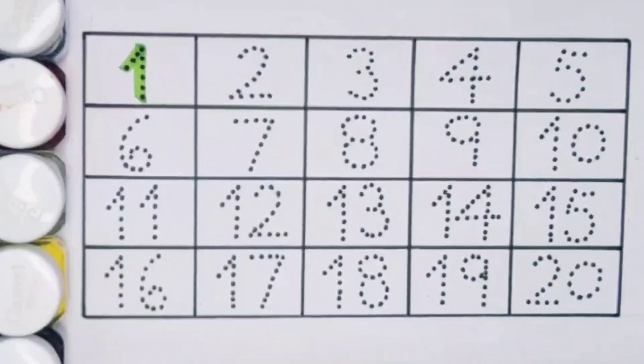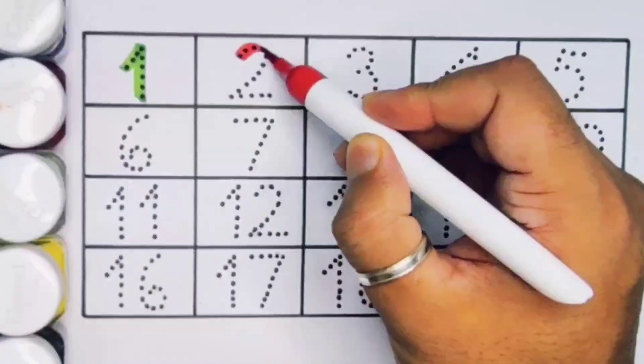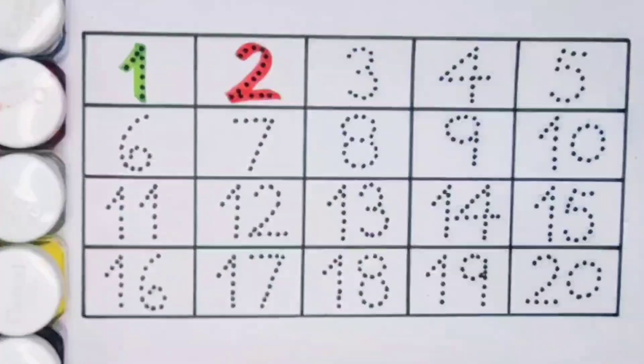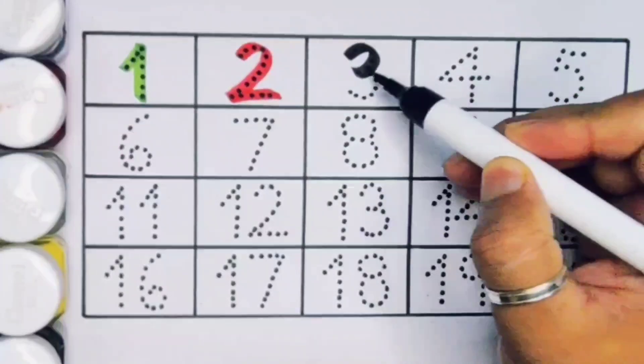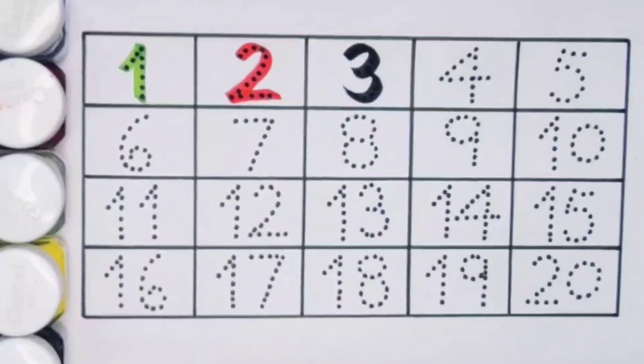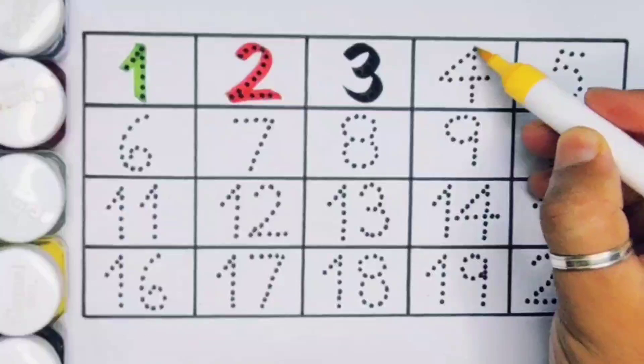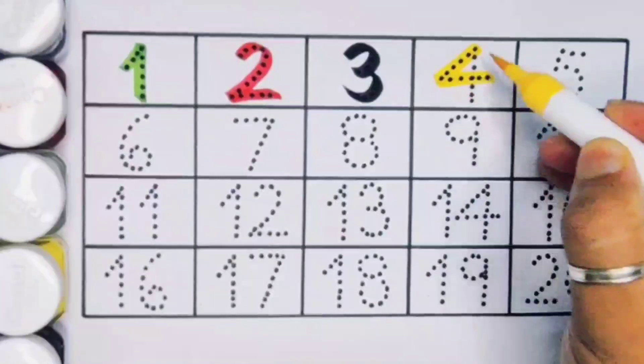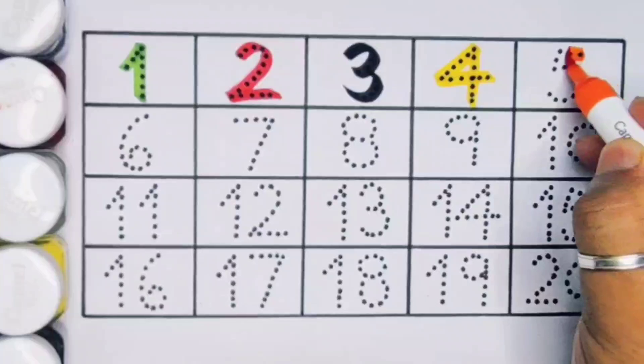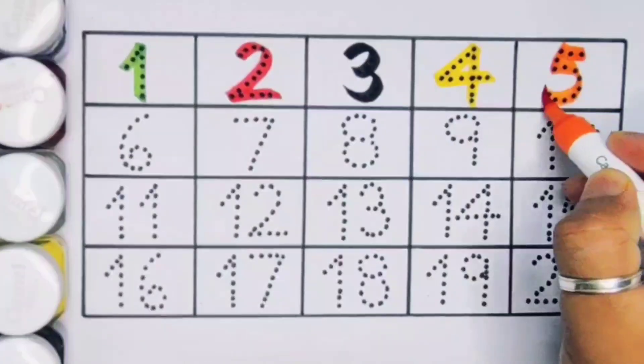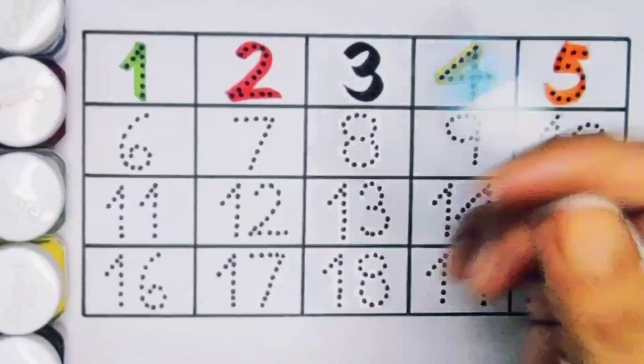Next, two, number two. Next, three, number three. Next, four, number four. Next, five, number five. Next, six, number six.